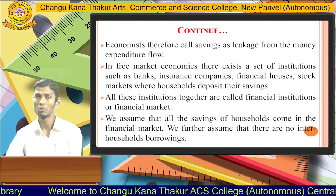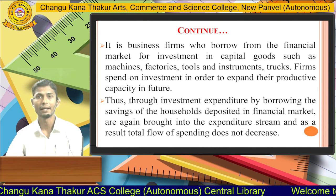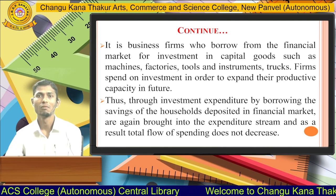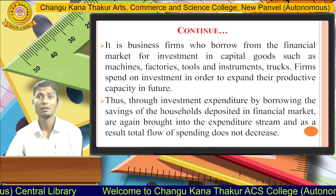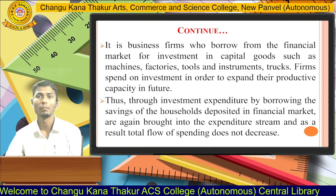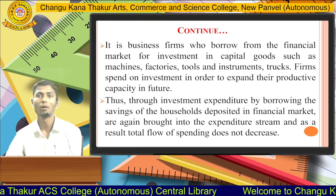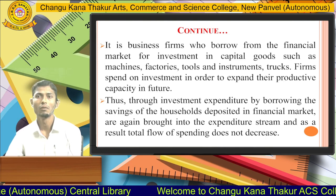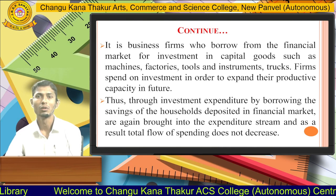We further assume that there are no inter-household borrowings. Business firms borrow from the financial market for investment in capital goods such as machines, factories, tools, and instruments — things firms spend on in order to expand their productive capacity in the future. Through investment expenditure by borrowing, the savings deposited in the financial market are again brought into the expenditure stream, and as a result total flow of spending does not decrease.